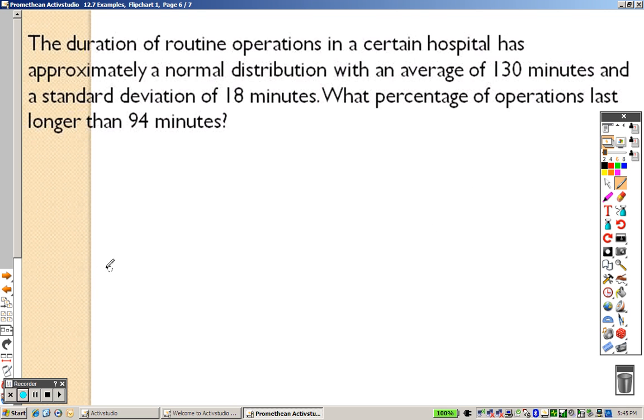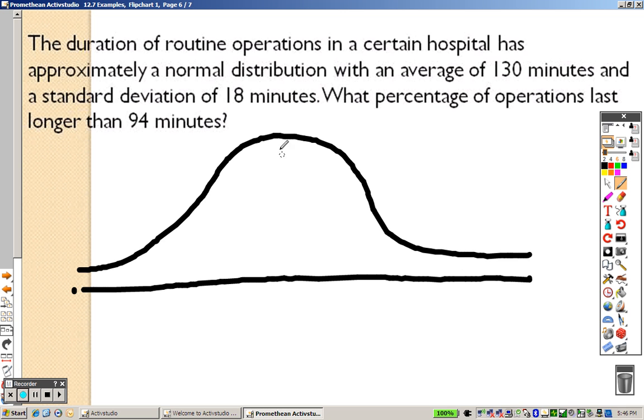And, last, same type of problem, same, using the curve, and when we do this, our mean, our average is 130. It says you add 18 to it, so we get 148, and when we add 18 to that, we end up getting 166.